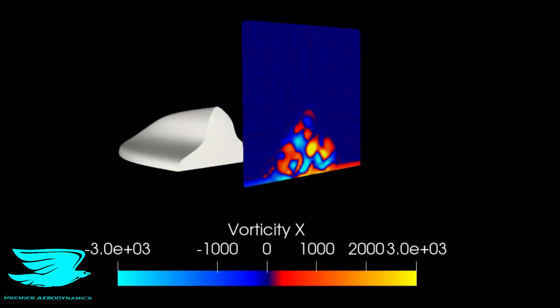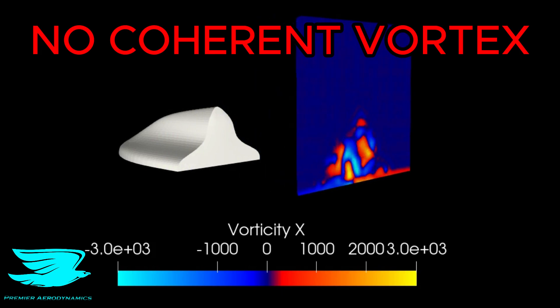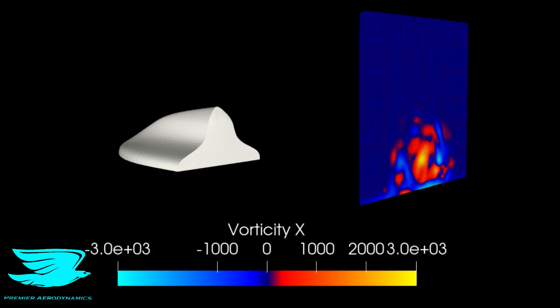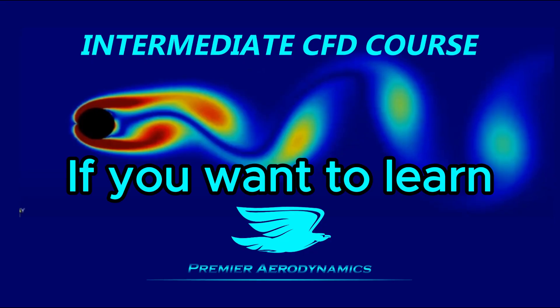Despite the general vortex generator shape, there aren't any coherent vortices — like none. That just goes to show you that looks can be deceiving.